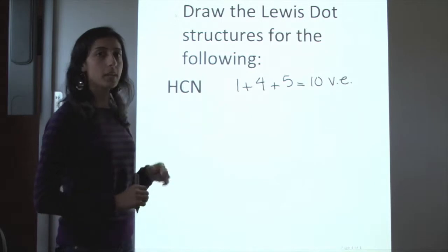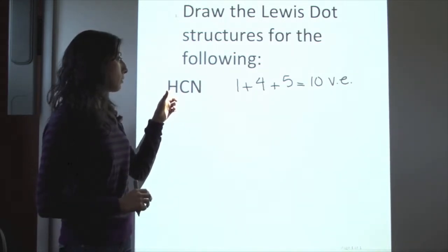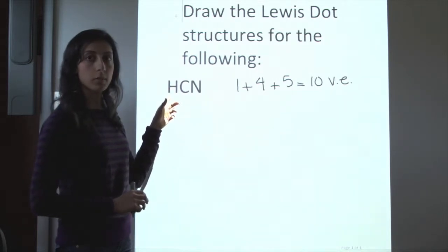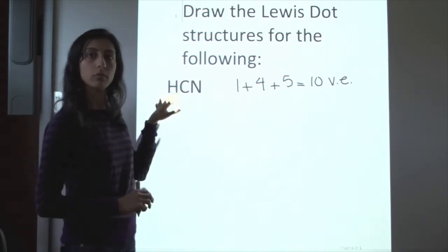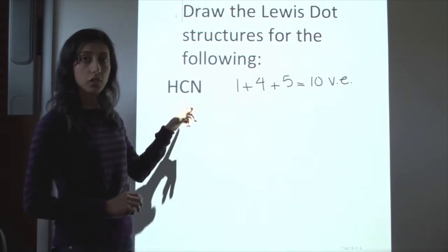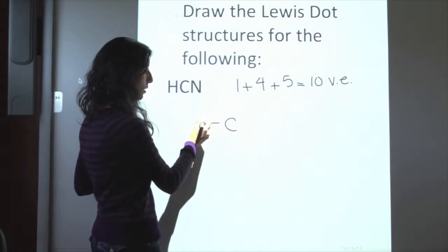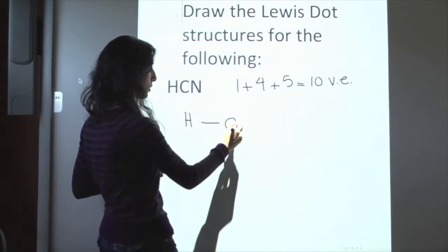Next we have to determine which one is the central atom. We know that hydrogen can't possibly be a central atom and have two other atoms connected to it. In this case, it's actually carbon that's our central atom, and we're going to have hydrogen and nitrogen.